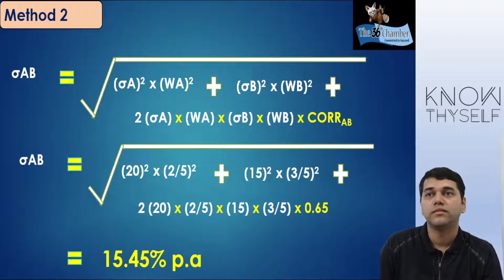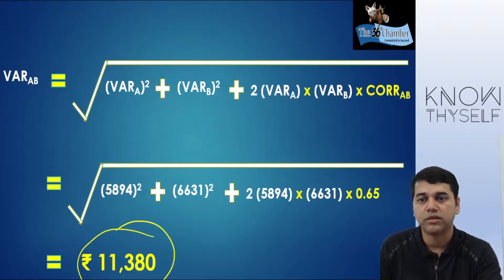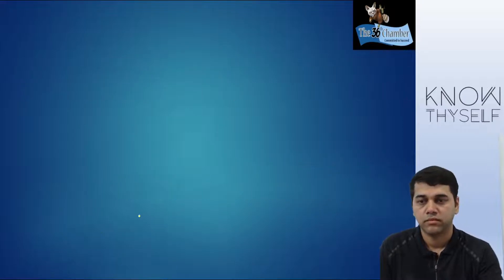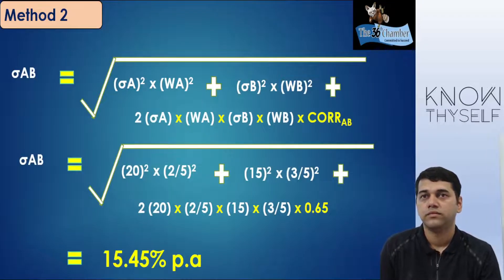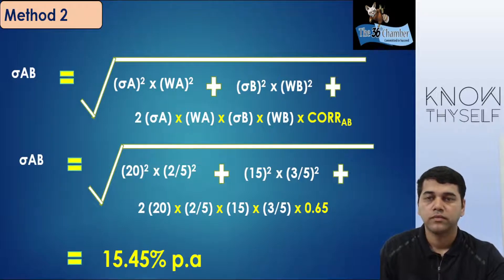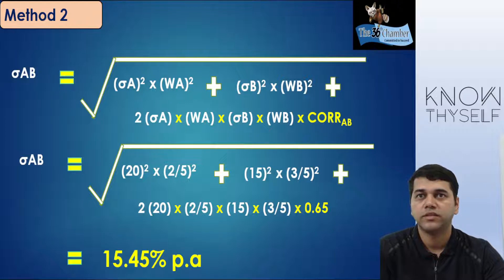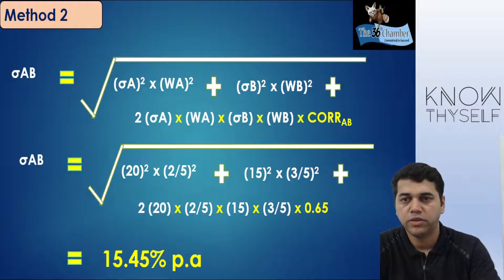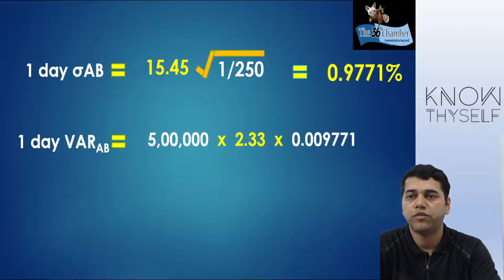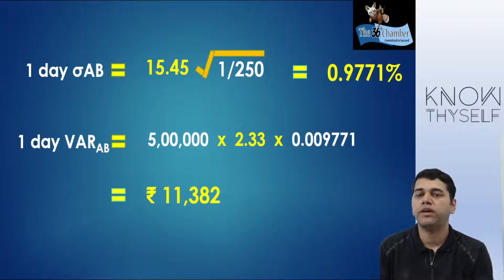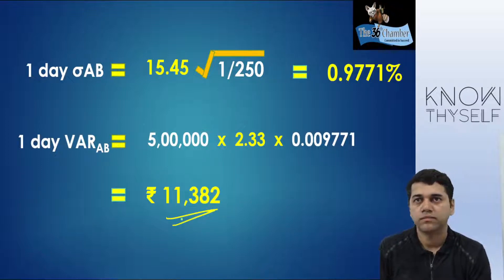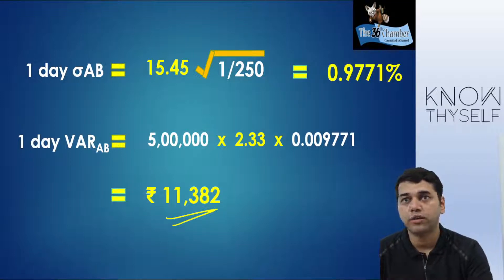With portfolio standard deviation of 15.45%, the portfolio one-day VAR comes to 11,382 — consistent with Method 1. Both methods give the same answer. Now you understand how to find out VAR for individual stock and for the portfolio. These questions have come two to three times in the exam from this chapter in your new syllabus — all 4-mark questions, simple questions.